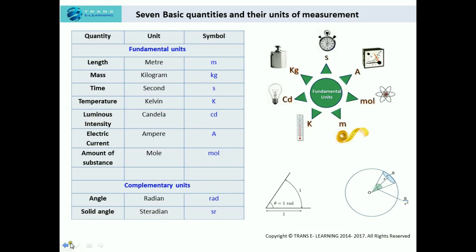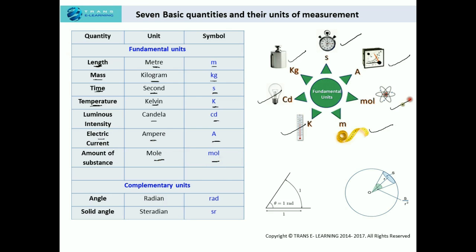Here is a recap of all of them: Length — unit meter, symbol M. Mass — unit kilogram, symbol kg. Time — unit second, symbol S. Temperature — unit Kelvin, symbol K. Luminous intensity — unit candela, symbol cd. Electric current — unit ampere, symbol A. Amount of substance — unit mole, symbol mol. Complementary units: Angle — unit radian, symbol rad. Solid angle — unit steradian, symbol sr.